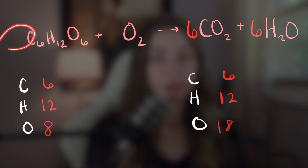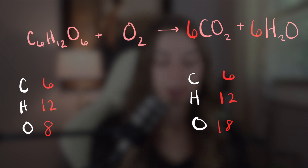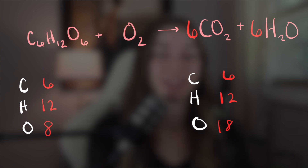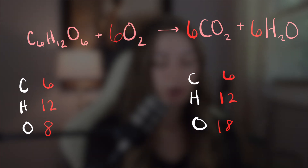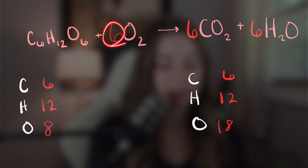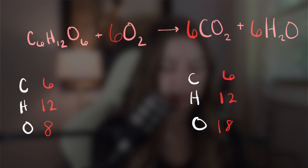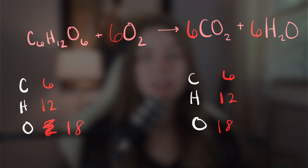I don't want to start adding coefficients to glucose because that's just going to mess the whole thing up, especially when I have a fantastic option right here — diatomic oxygen. So I can just add a coefficient in front of the diatomic oxygen to balance all the oxygens. I put a six in front of the diatomic oxygen, so we have six times two, which is 12, plus six, which is 18. And now our equation is balanced.